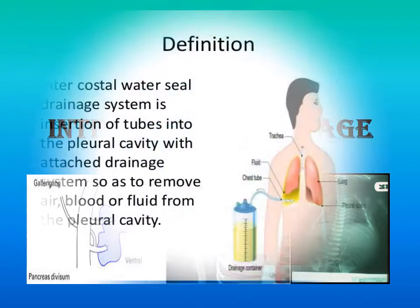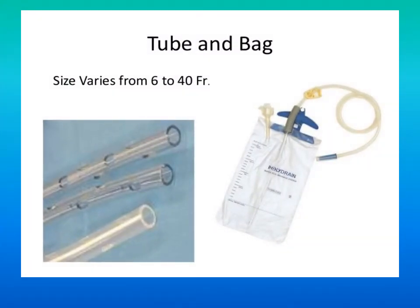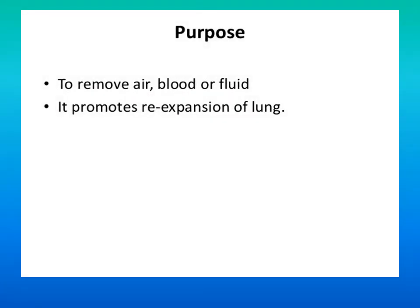Intercostal water seal drainage system is the insertion of tubes into the pleural cavity with an attached drainage system so as to remove air, blood, or fluid from the pleural cavity. The types of tubes and bags vary in size depending upon the size of the patient, ranging from 6 to 40 French. The purpose is to remove air, blood, or fluid and to promote re-expansion of the lung.